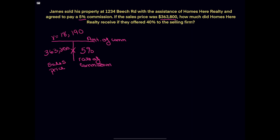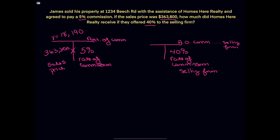But that's not what we're looking for, so our next step is to go to our next rate. The rate that we're given is 40%, and this is the rate of commission to the selling firm. Up top, that's going to be the amount of commission to the selling firm, and that's going to be based off of the total commission. We know the total commission from the previous t-bar was $18,190. So when you multiply $18,190 times 40%, you find out the other firm would be given $7,276.